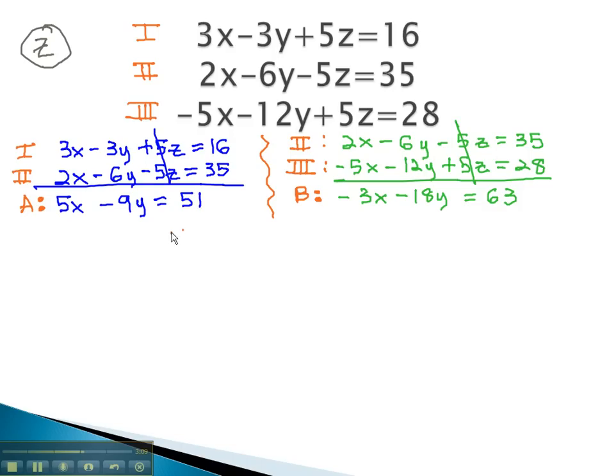We now have two equations, equation A and equation B, which have two variables. 5x minus 9y equals 51, and negative 3x minus 18y equals 63. And we can solve this equation quite quickly.